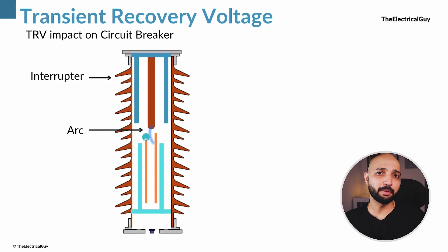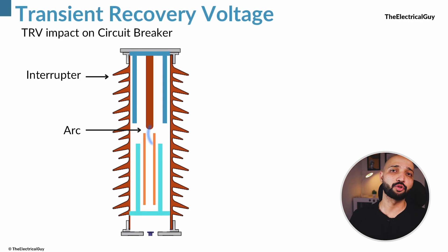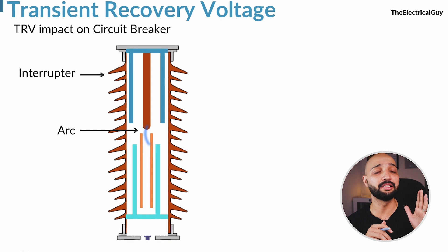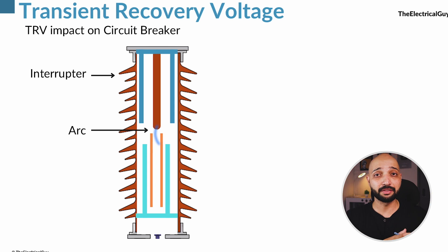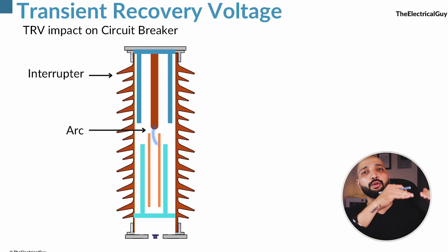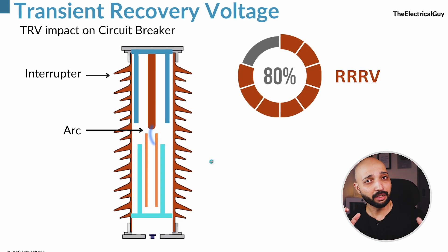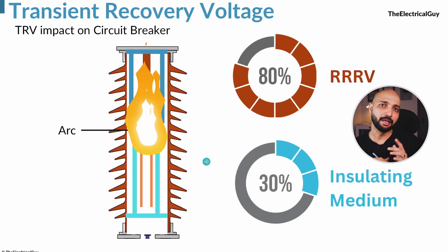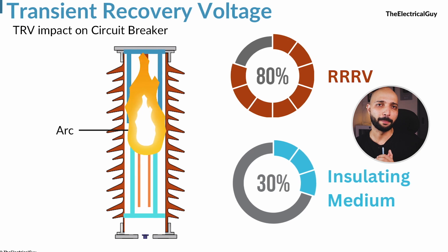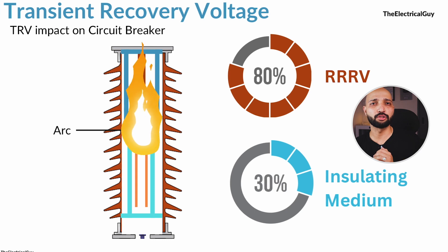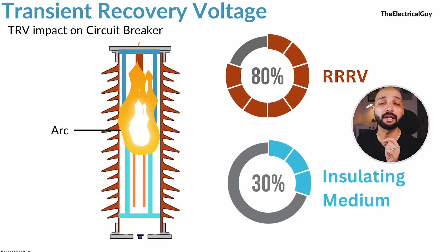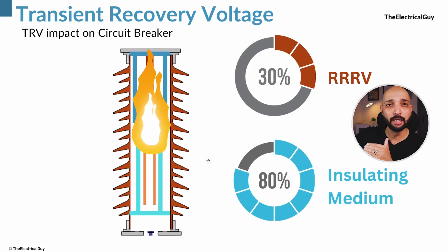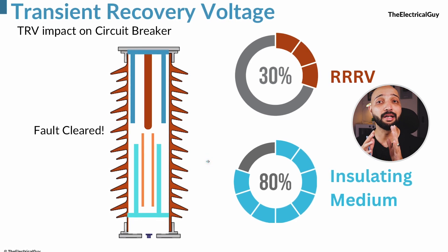When the circuit breaker is interrupting a fault, it results in arcing in the interrupting medium. During the process of interruption, the arcing medium is trying to regain its insulating properties. For the interruption to be successful, the interrupting medium must withstand this fast rising recovery voltage. There is essentially a race between the interrupting medium transitioning from a conducting state to an insulating state against the rising TRV. If the rate of rise of recovery voltage — RRRV — is greater than the speed at which the medium regains its insulating strength, the breaker will fail to clear the fault and the fault current will continue to flow via the arc.